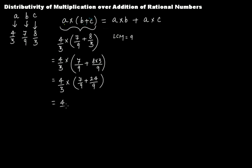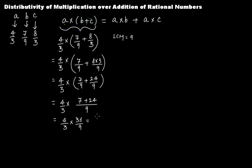Adding 7 and 24 gives 31, so we have 4 over 3 times 31 over 9. This becomes 4 times 31 divided by 3 times 9, which gives 124 over 27.